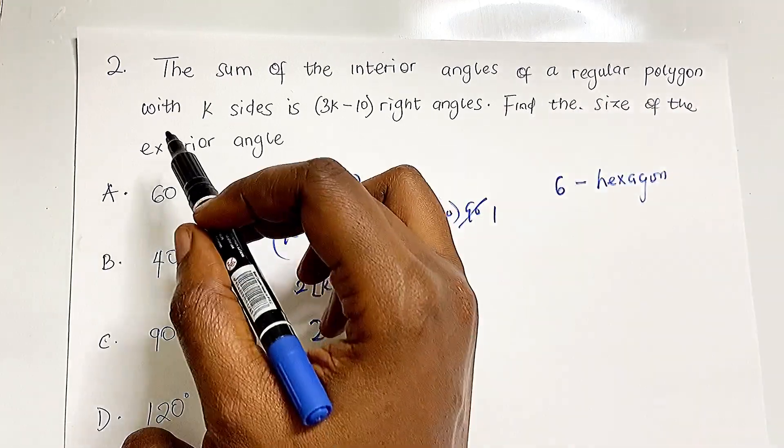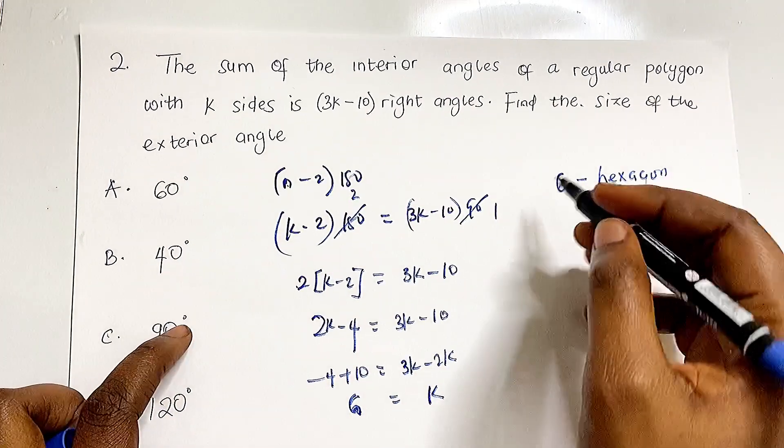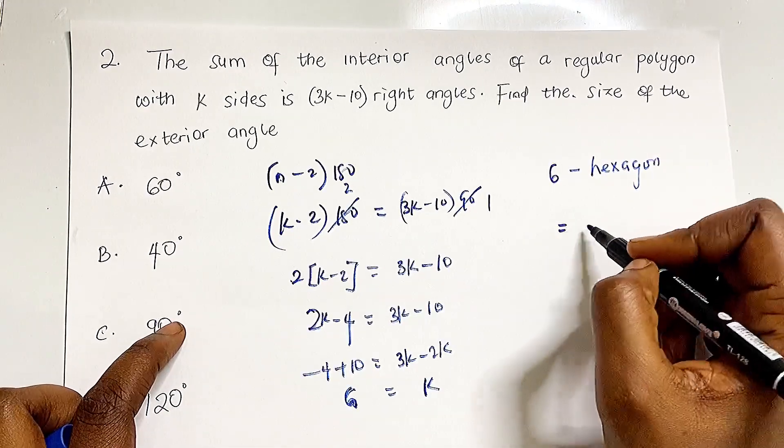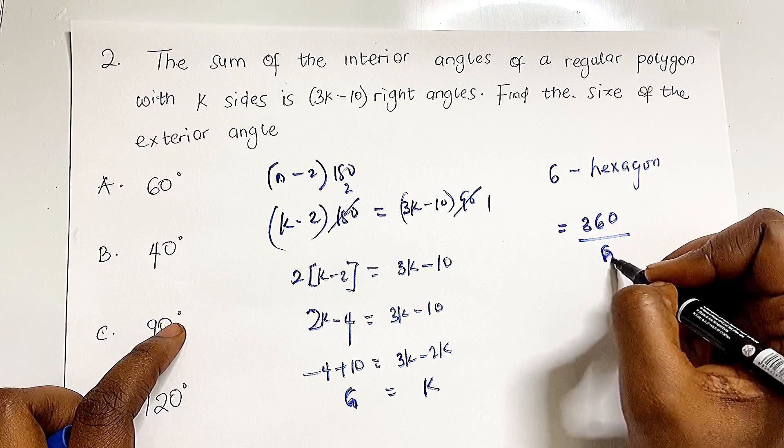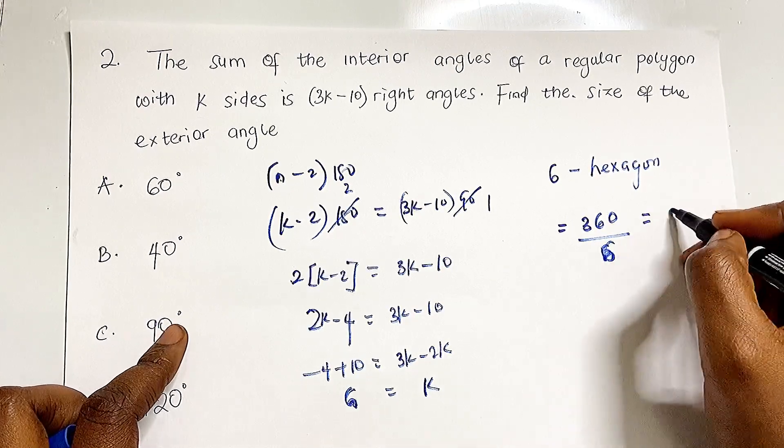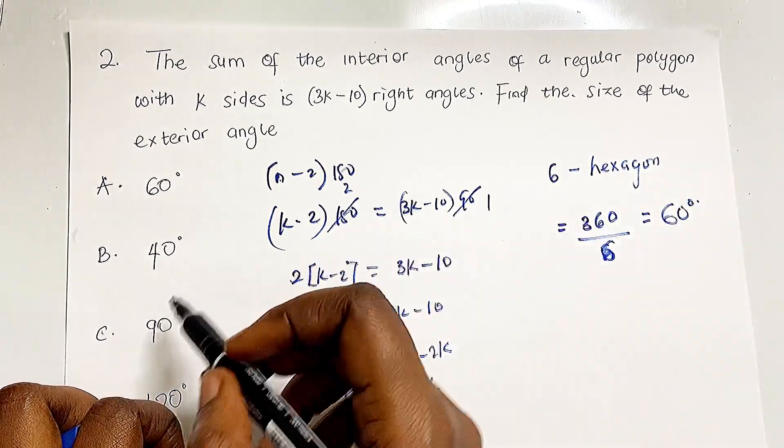The question asks for the exterior angle. Each exterior angle equals 360 ÷ n. Since n = 6, we have 360 ÷ 6 = 60 degrees, which is option A.